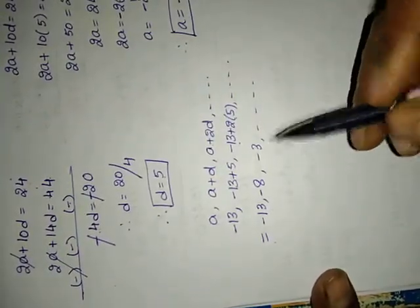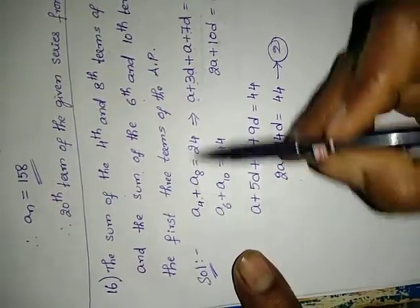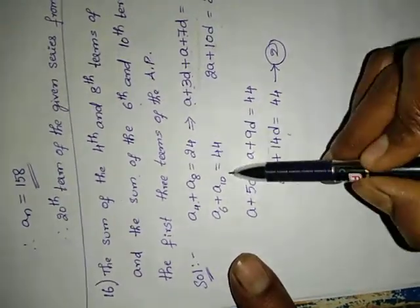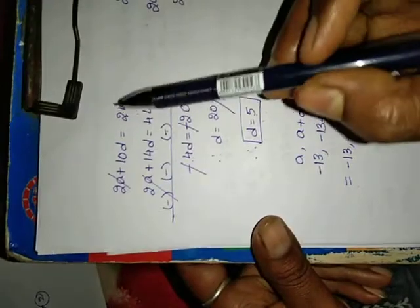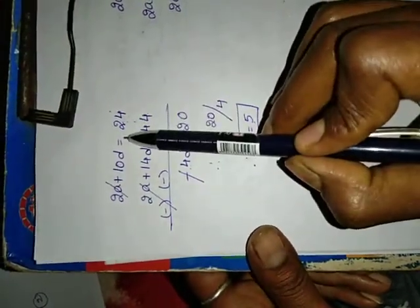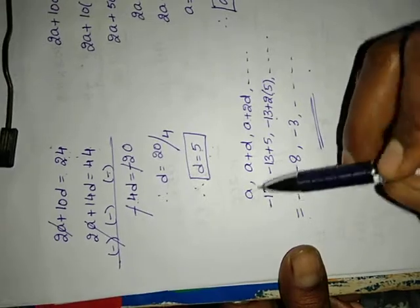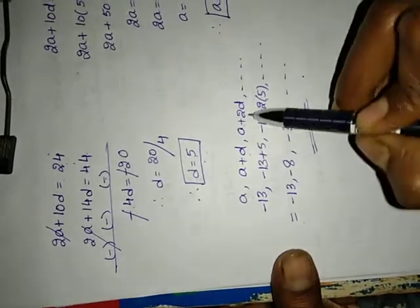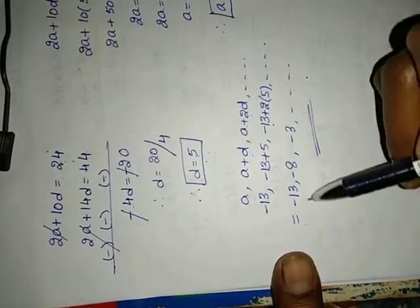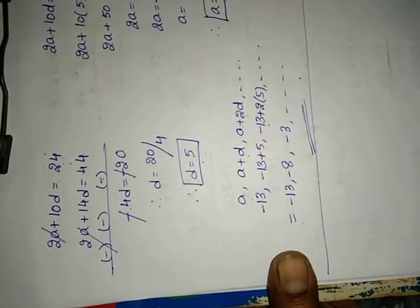They asked for the first three terms only. Our problem is completed. To summarize: we set up two equations from the given conditions, solved them to get D equals 5 and A equals minus 13, then substituted into A, A plus D, A plus 2D to get the series.